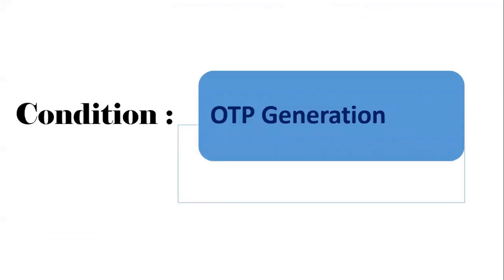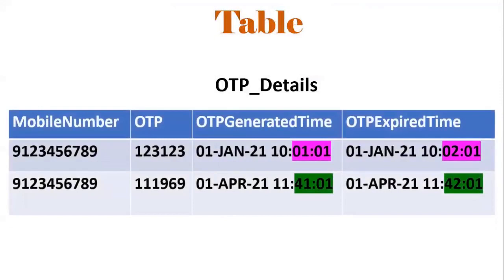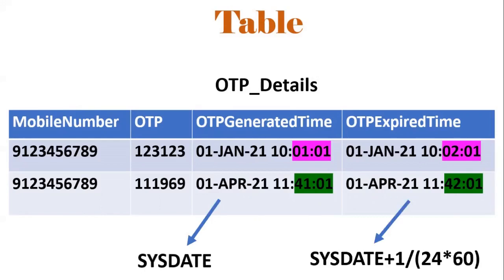Now we will see the actual requirement. First requirement is OTP generation, achieved using DBMS_RANDOM.VALUE. We should have the table structure first. The OTP details table has four columns: mobile number, OTP, OTP generated time, and OTP expired time. We are considering one minute as the expired time, so one minute will be added. For example, for the first record at 10:01:01, the expired time is 10:02:01. The second record at 11:41:01 expires at 11:42:01. The OTP should be entered within one minute to be valid.